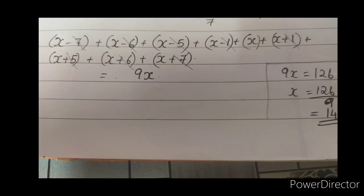We will add minus 7 plus 7, and minus 6 plus 6. Six minus 6 is 0. Five minus 5 is 0. Negative 5 and positive 5 cancel. Negative 1 and positive 1 cancel. We are left with adding x nine times, which gives 9x.